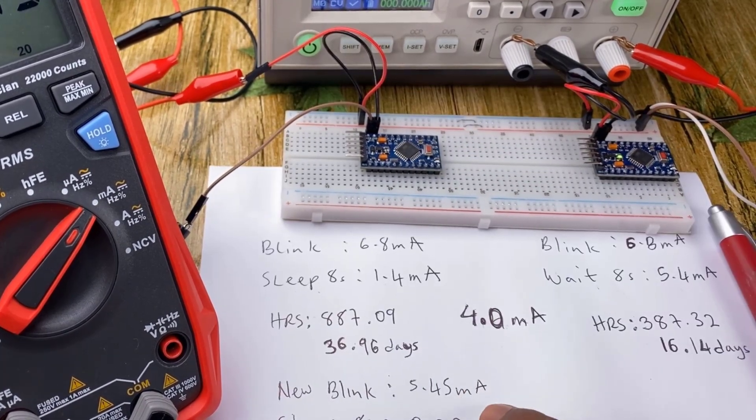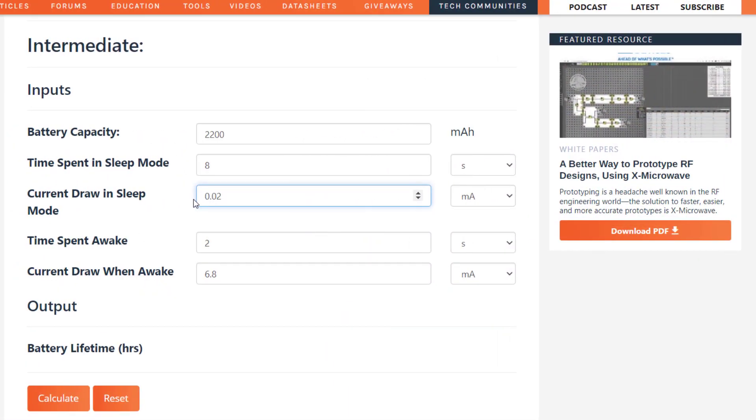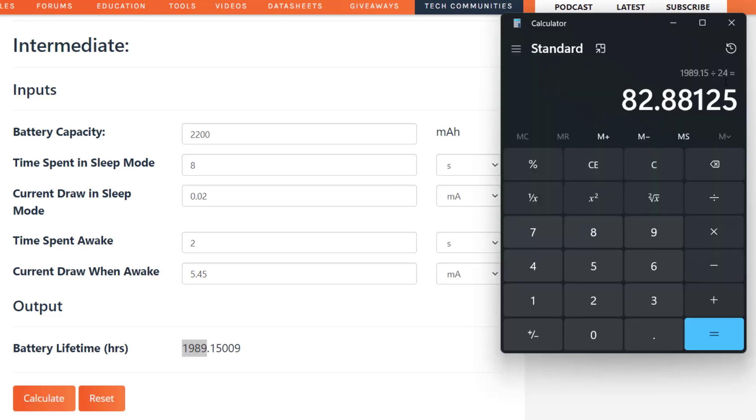And now putting these new figures into the calculator software, we can see changing from 0.02 during sleep and 5.45 when awake leads to 1989 hours, which is significantly higher than the previous value we saw during sleep mode. And so dividing this figure by 24, we now have 82.88 or approximately 83 days.